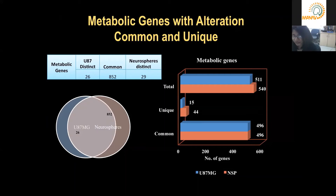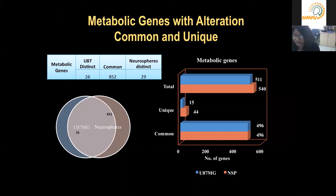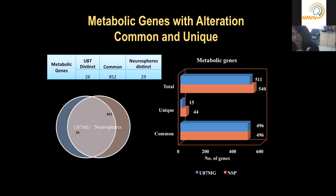Although only seven percent of total mutated genes belong to the metabolic gene class, there are 44 genes in neurospheres with unique mutations, which would definitely impact how cells metabolize nutrients and eventually impact growth. There were 496 common metabolic gene mutations between U87 and NSP, 15 unique metabolic genes mutated in U87, and 44 unique metabolic genes mutated in NSP.